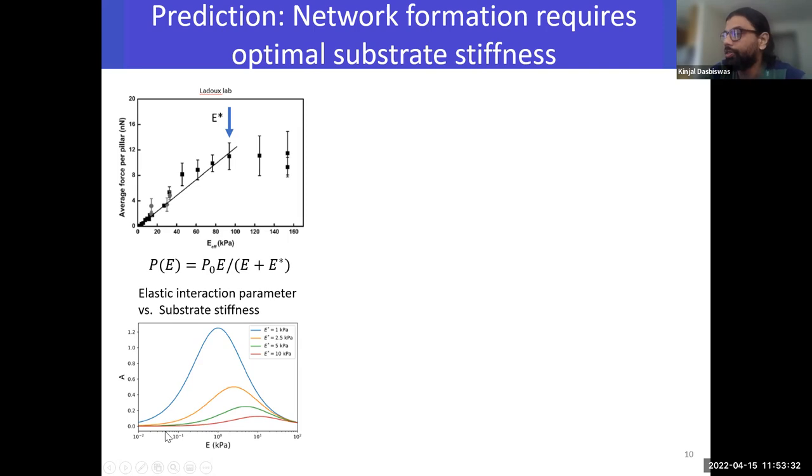What this tells us is very easy to explain. On softer substrates, the cells just do not pull much, and so the deformations are small. On stiffer substrates, even if the cells are pulling a lot, the substrate is harder to deform. So in both cases, the elastic interaction becomes small at very soft or very stiff substrates, because our elastic interactions depend on the deformations. They reach some maximum at some optimal substrate stiffness, which is in fact this E star value. Here we are just showing curves for different possible E stars, which is a property of that particular cell and can depend on other things like matrix chemistry.